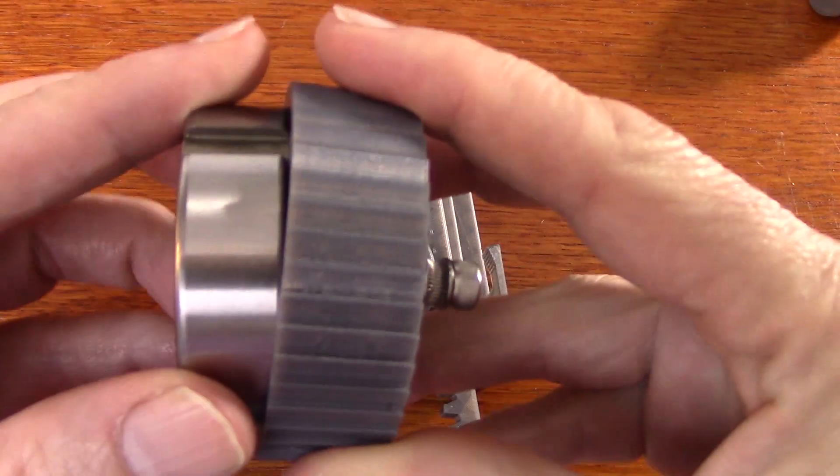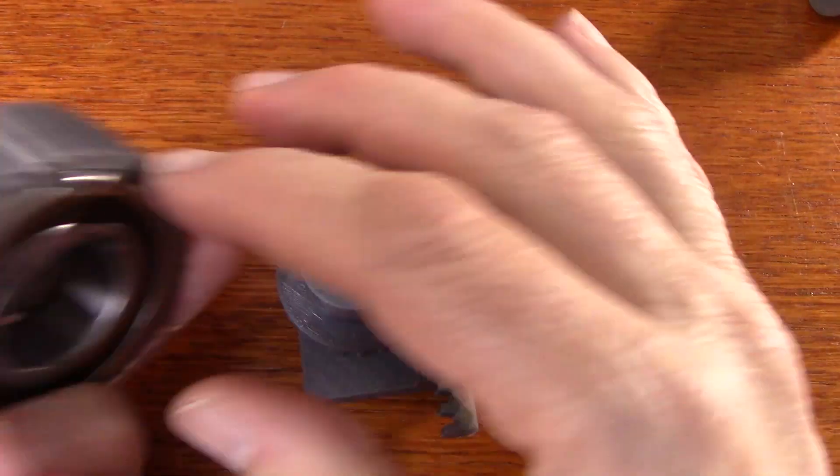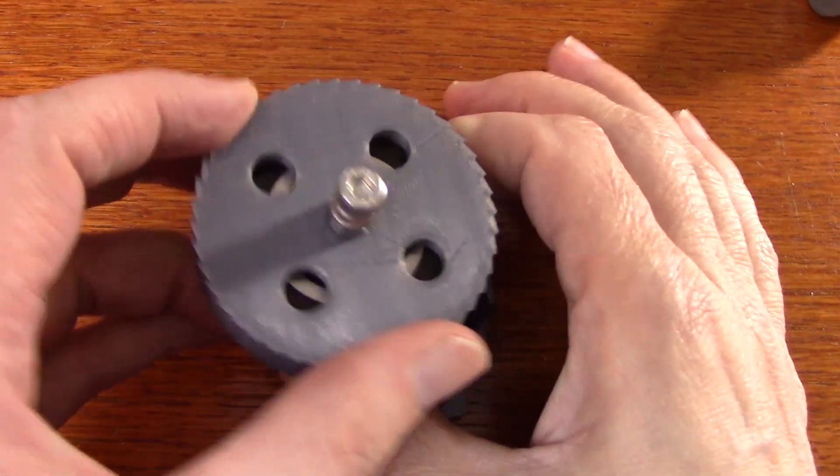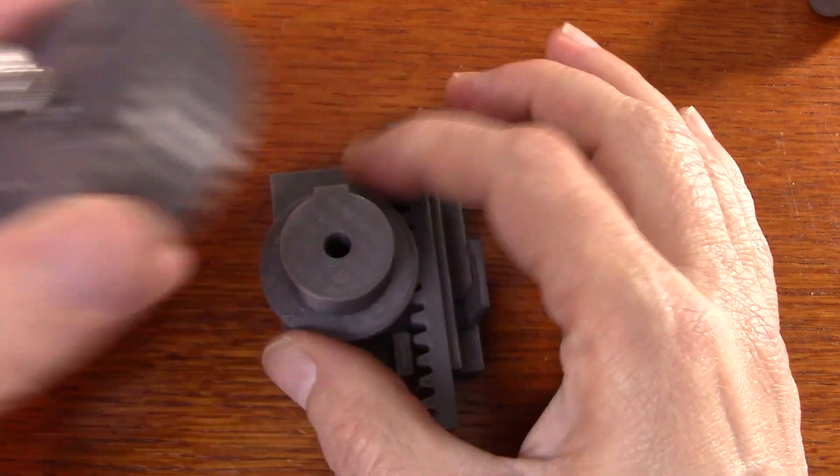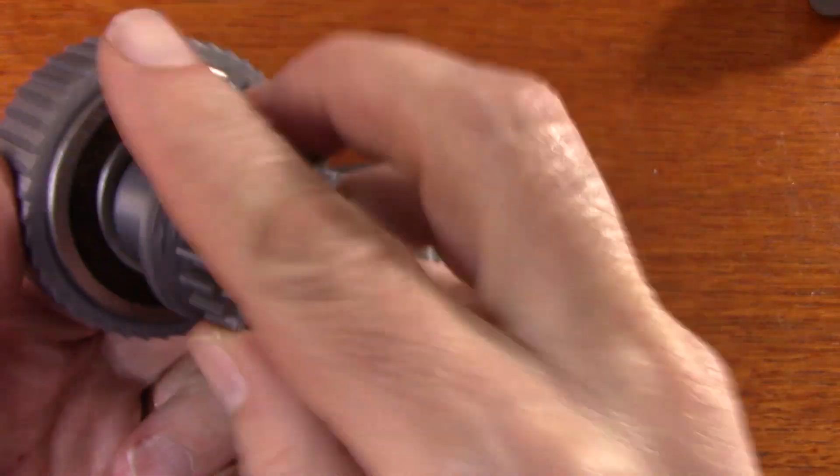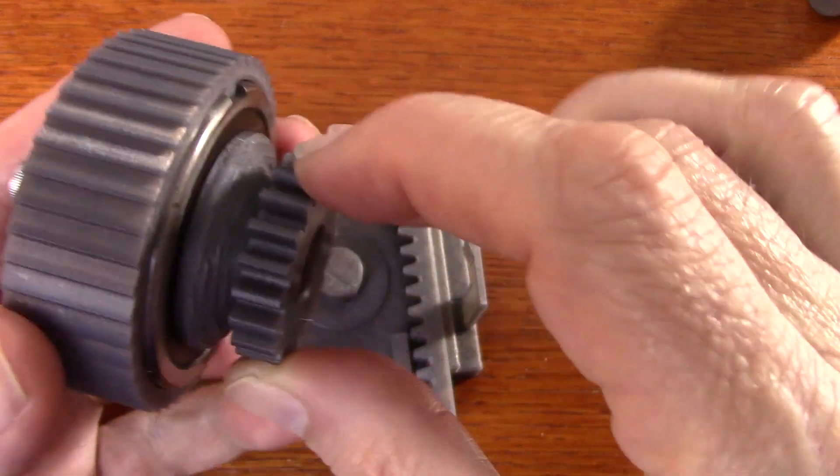So I'll put the clutch inside like so and then you can see it just goes into the top there. It's probably easier to take it out and then put it in because it's keyed.